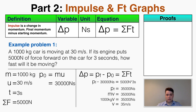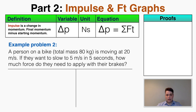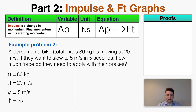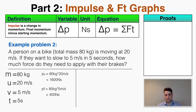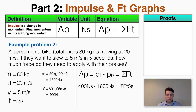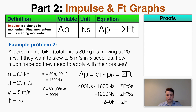Example two: a person on a bike with a total mass of 80 kg is moving at 20 m/s and wants to slow to 5 m/s in 5 seconds. How much braking force is needed? The initial momentum is 1,600 Newton seconds and the final momentum is 400 Newton seconds. Plugging into the impulse equation: 400 minus 1,600 equals net force times 5 seconds, giving a net force of negative 240 Newtons. The negative sign makes sense because the brakes apply force opposite to the direction of motion.